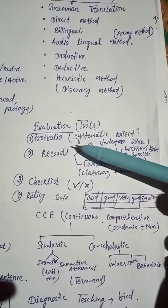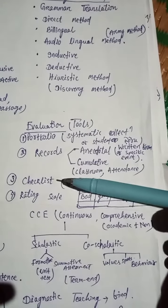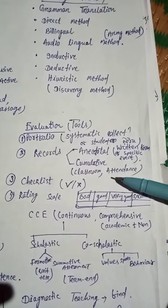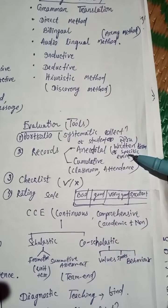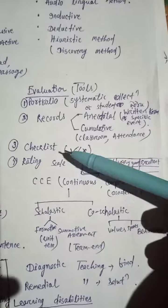Evaluation tools: portfolio is good, which is systematic correction of student work. Records, anecdotal and cumulative, which is in the classroom, attendance, and anecdotal which is written form of specific events, sports, etc.